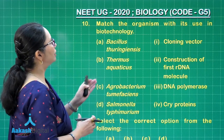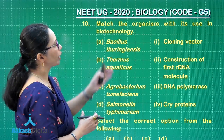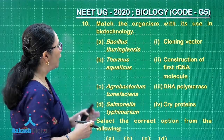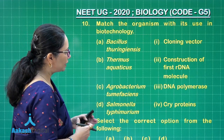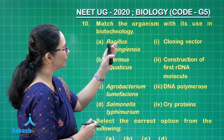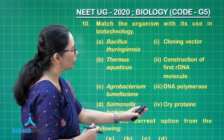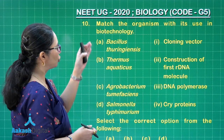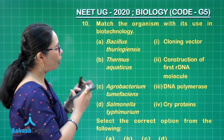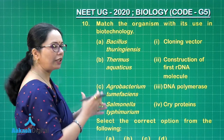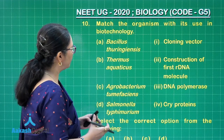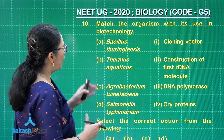Here we have certain organisms and their uses in biotechnology. Bacillus thuringiensis is the source for cry proteins. It is a soil bacterium that forms endospores, and within those endospores there is a crystalline protein in the inactive form.